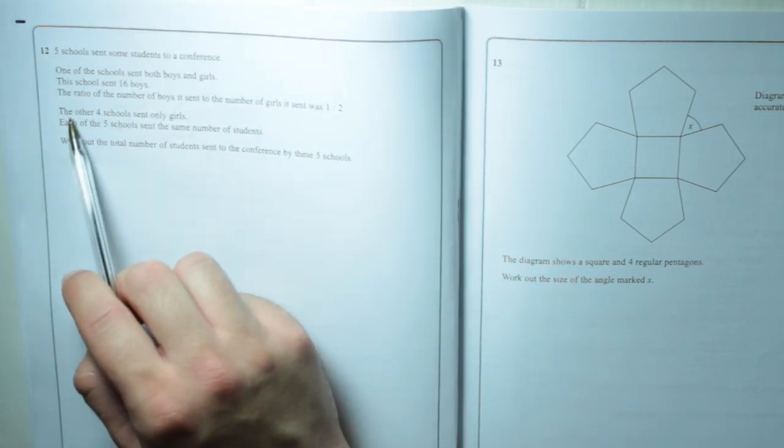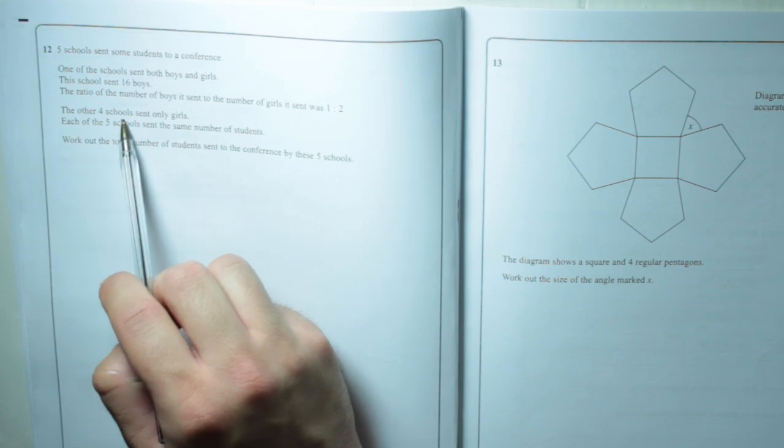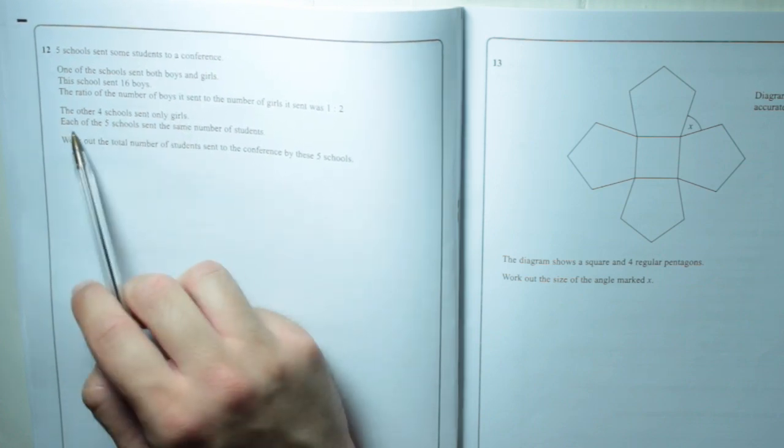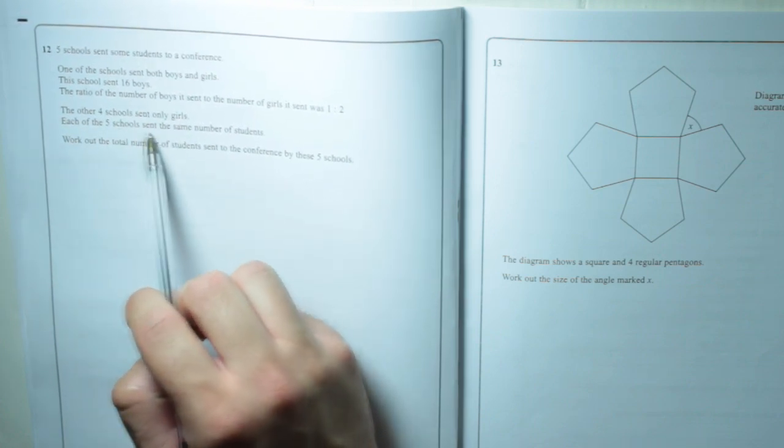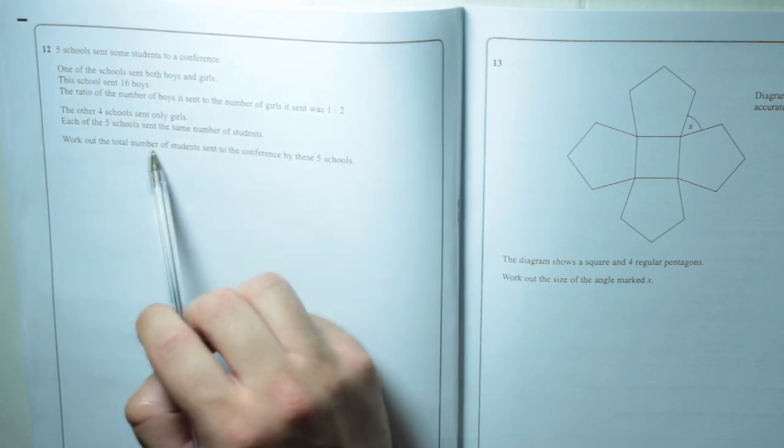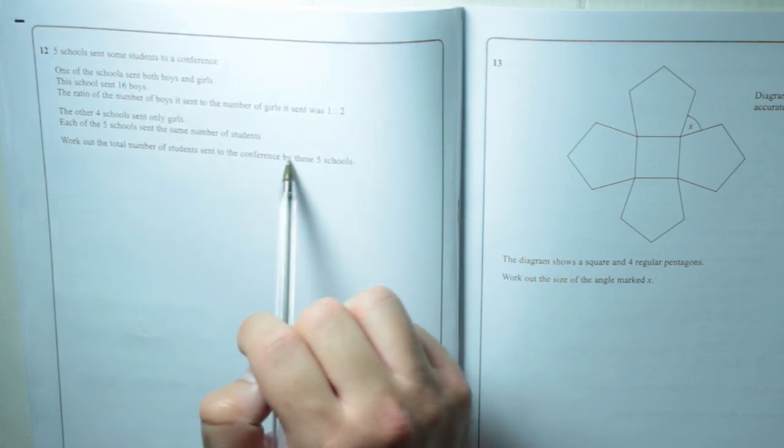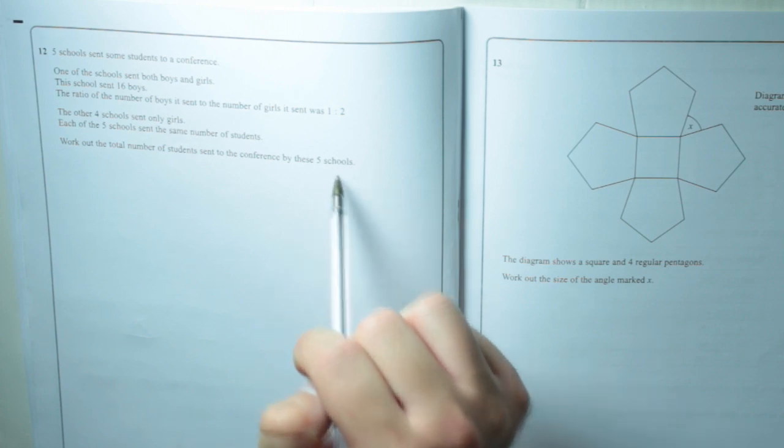And there were 16 boys. The other four schools sent only girls. Each of the five schools sent the same number of students. Work out the total number of students sent to the conference by these five schools.